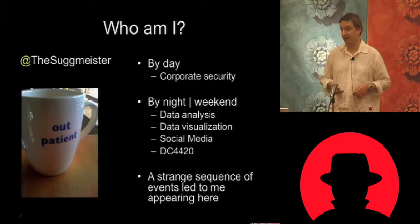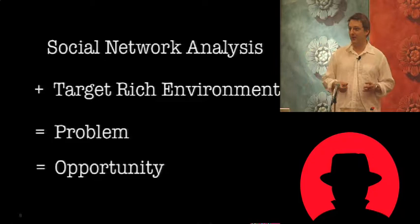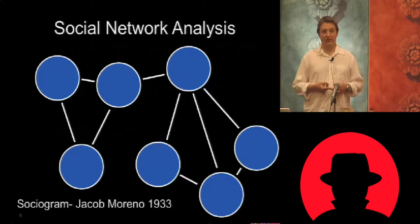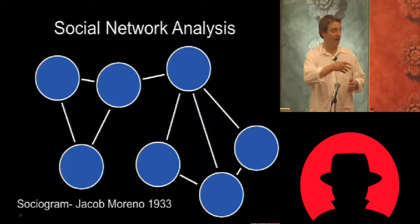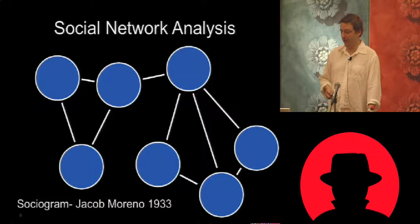Social network analysis — a target-rich environment is either a problem or an opportunity depending on which side of the table you're looking from. Social network analysis has been around since the Greeks, but Jacob Moreno is widely credited as the originator of the node-link diagram published first in the New York Times in 1933, and he really led the field in understanding the dynamics of social networks.